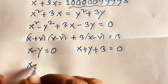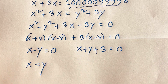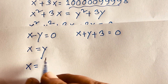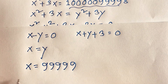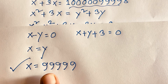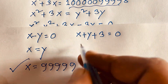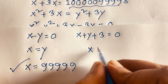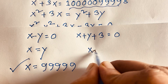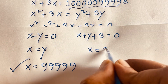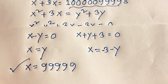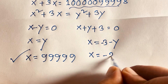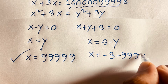So we find out there are two cases. Our first case is x minus y equals 0, giving x equals y. The other case is x plus y plus 3 equals 0. Recalling that y equals 99,999, from the first case x equals 99,999. For the second case, x equals negative 3 minus y, which gives x equals negative 3 minus 99,999.